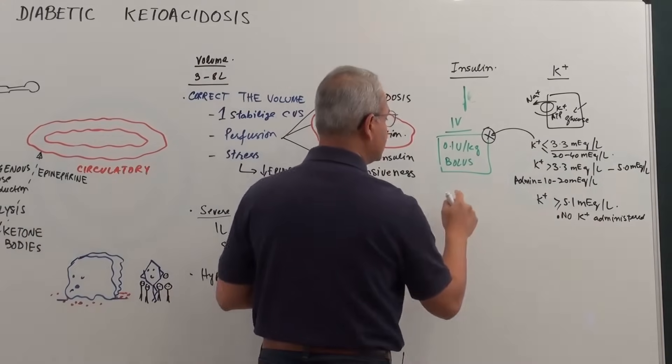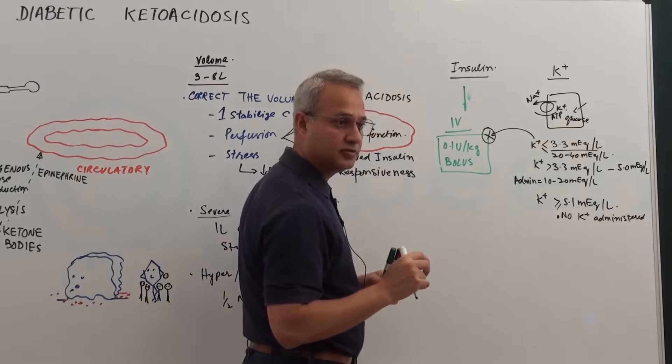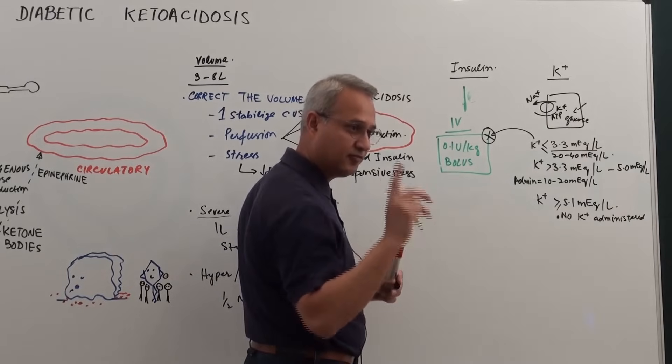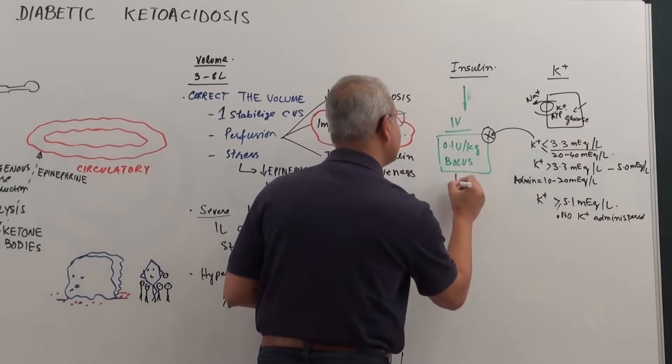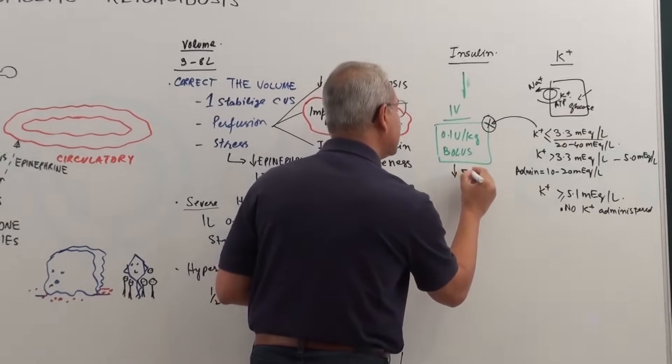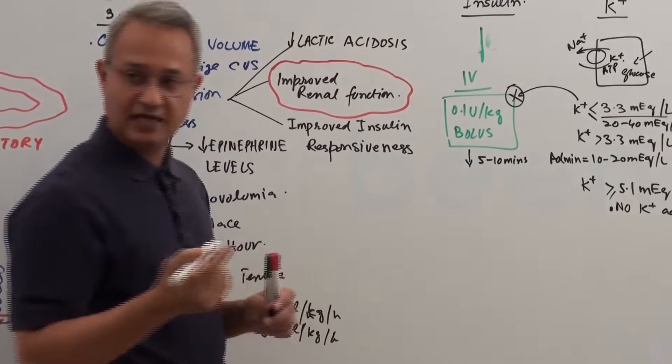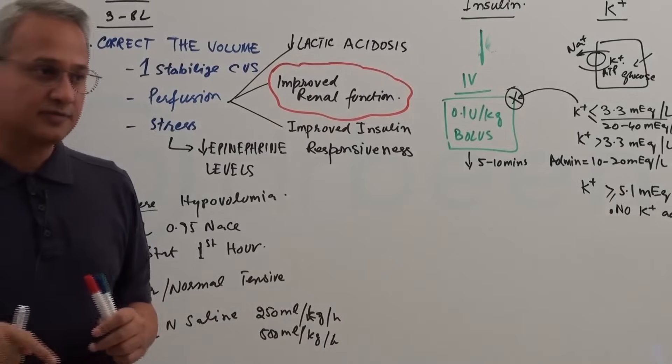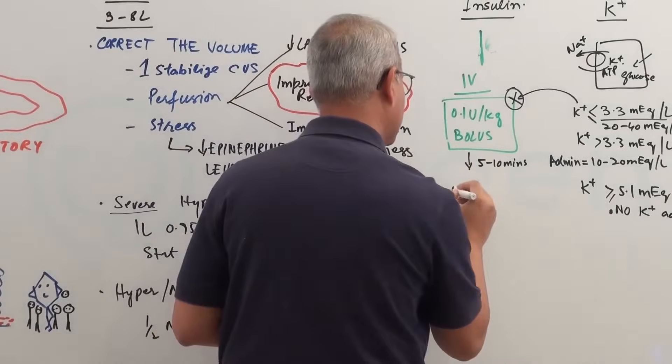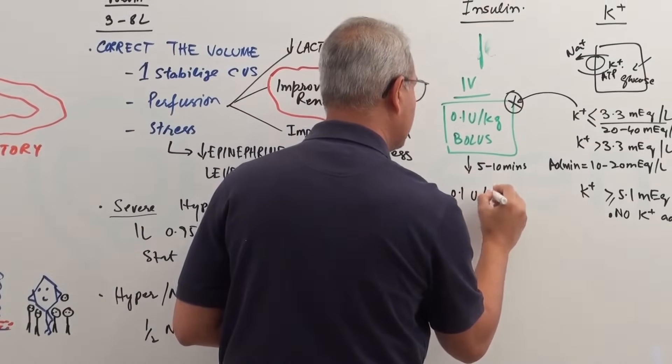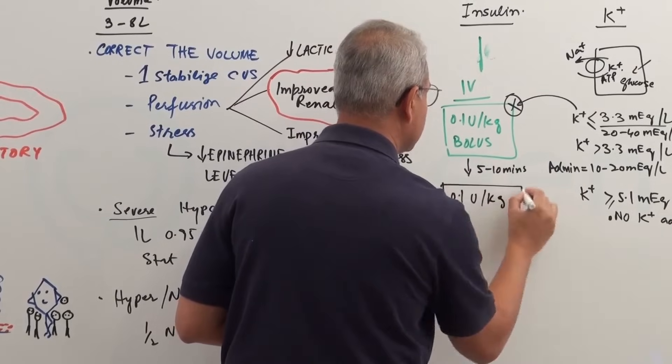Insulin bolus, you gave 0.1 units per kilogram first hour, within 5 to 10 minutes. Then you start infusion of same 0.1 unit per kilogram IV.